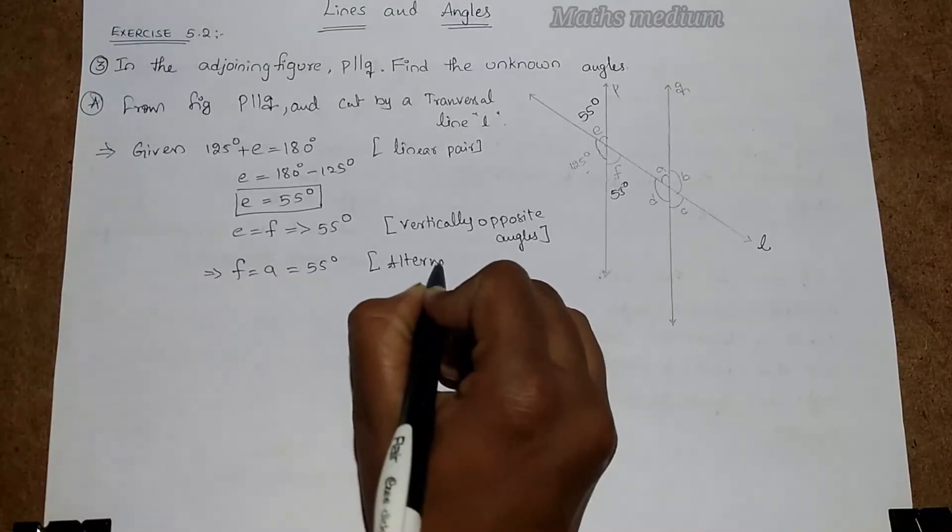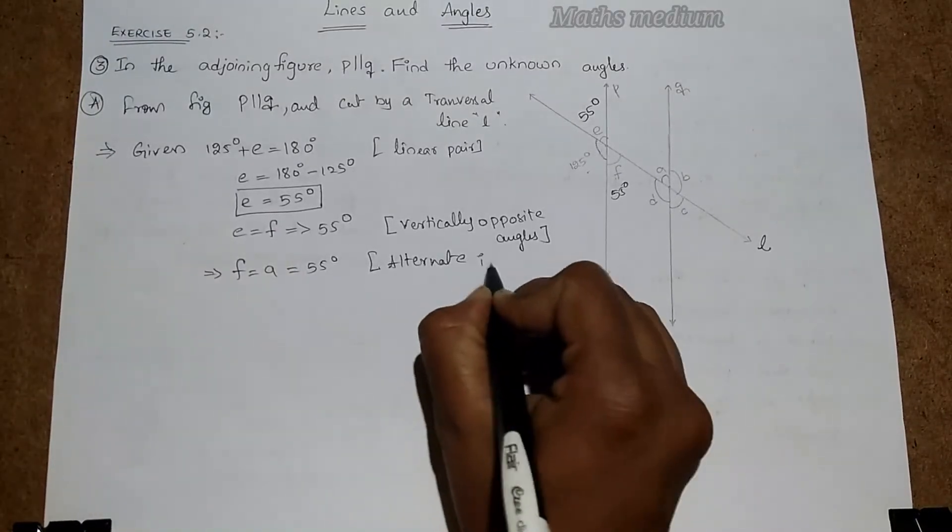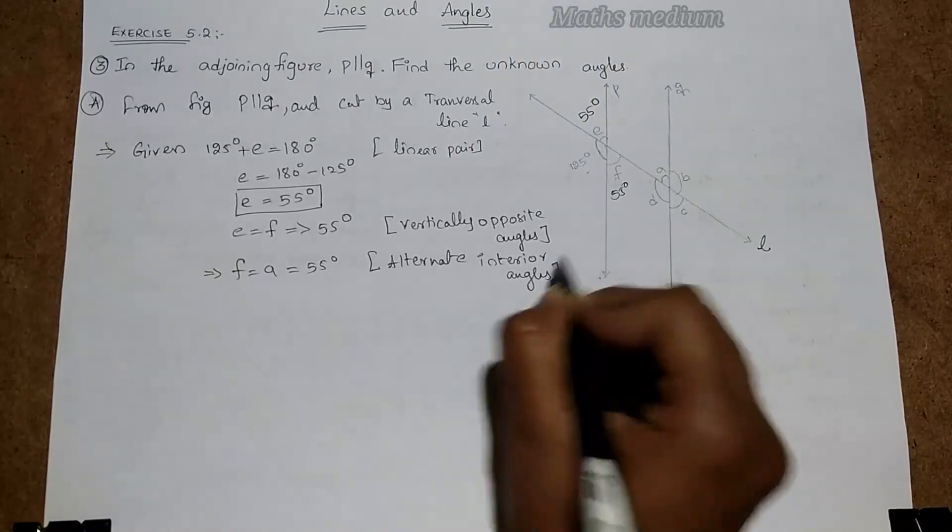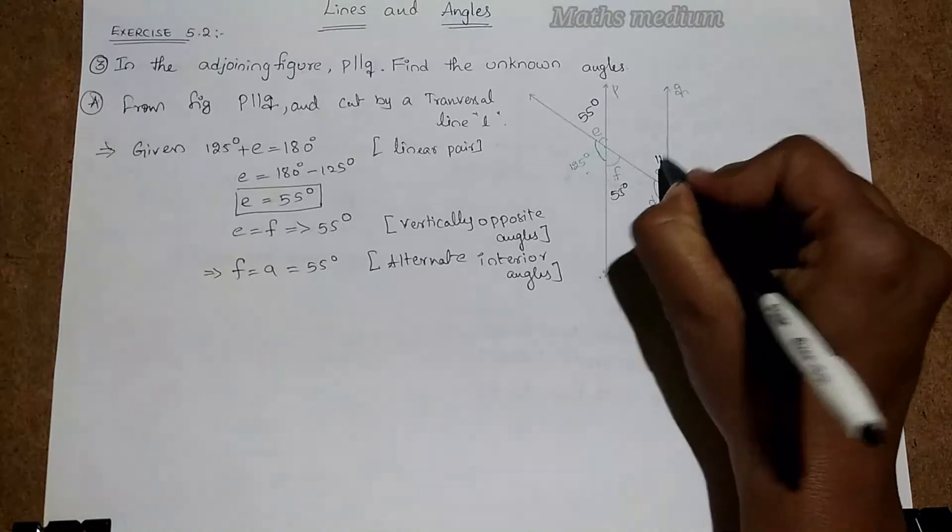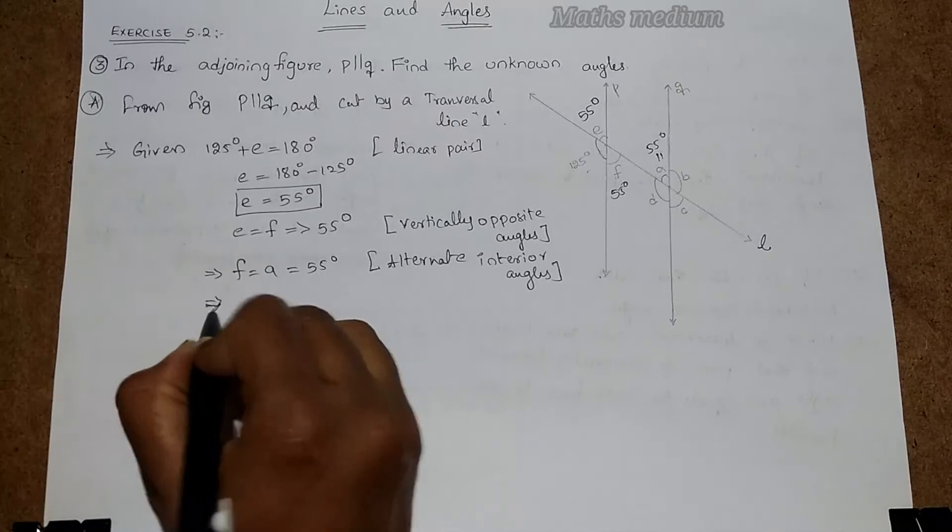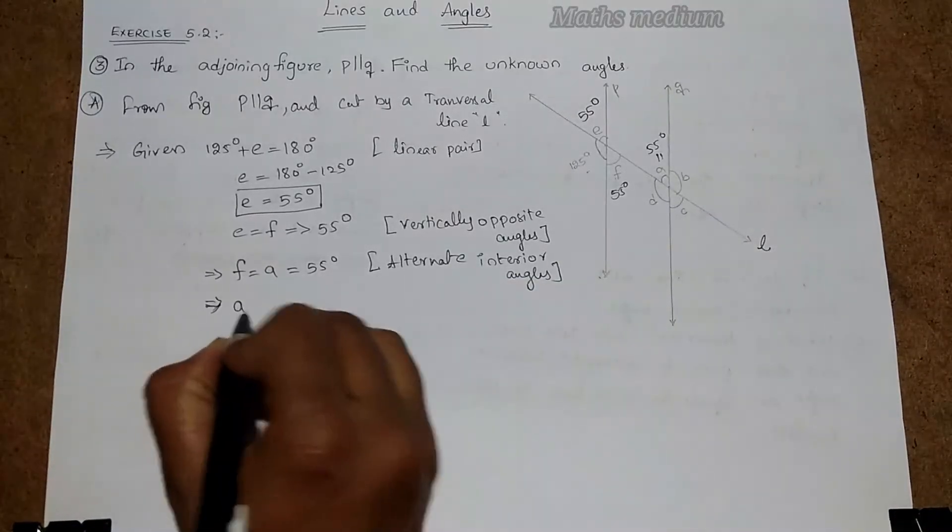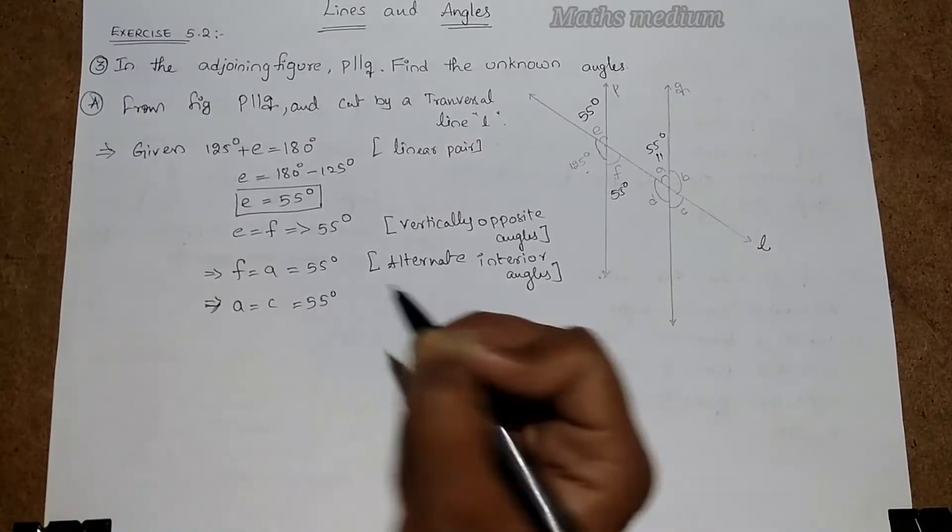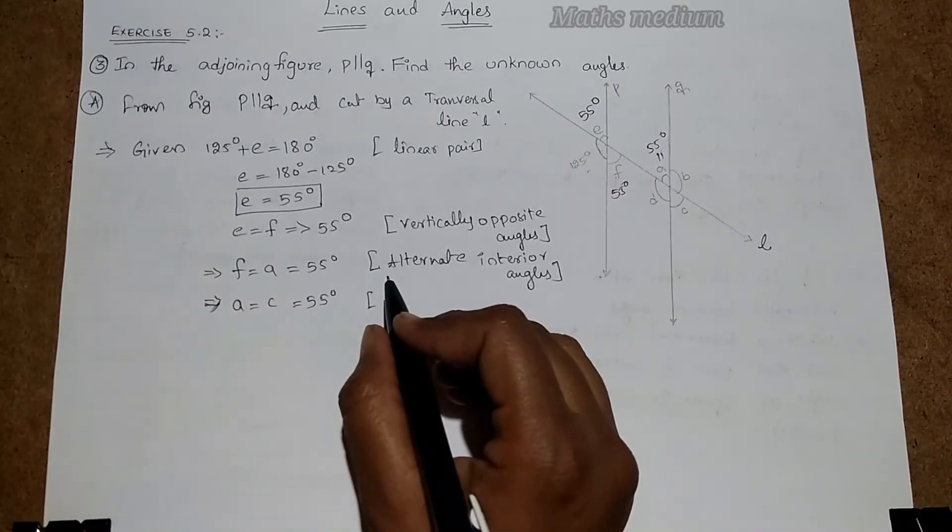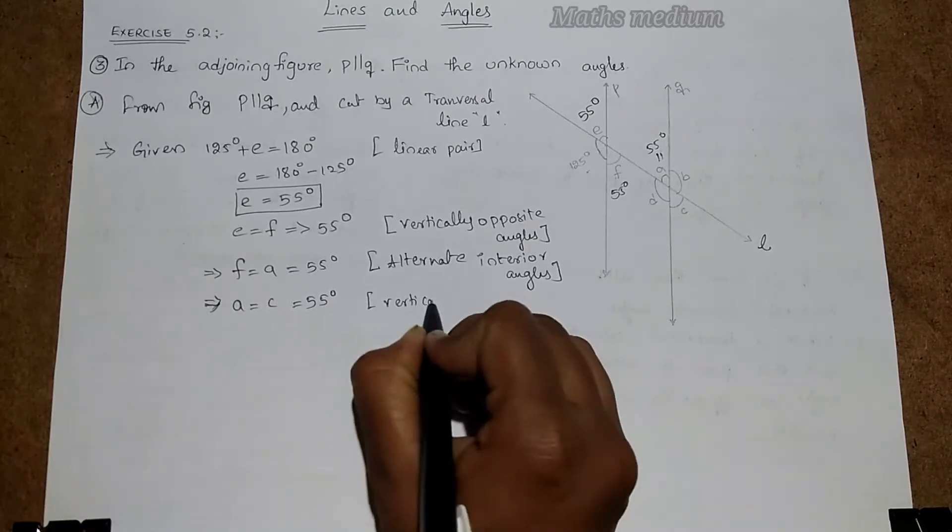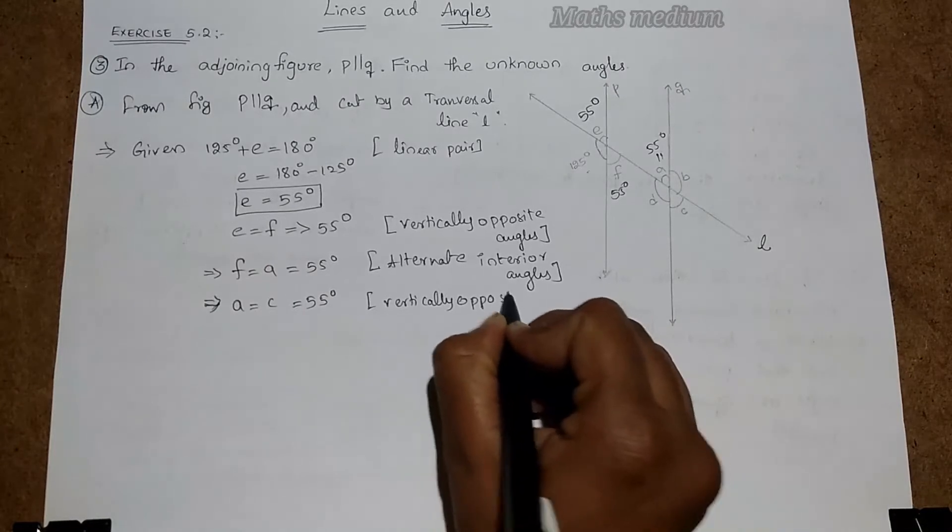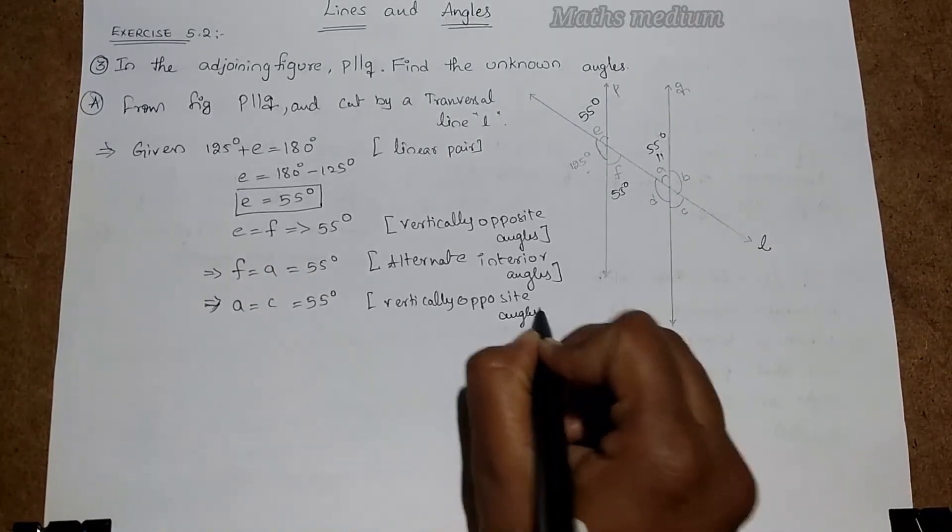This two are also equal, this is also 55 degrees. From that we can say A equal to C, that is 55 degrees. This is also vertically opposite angles.